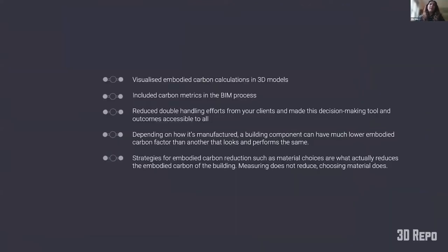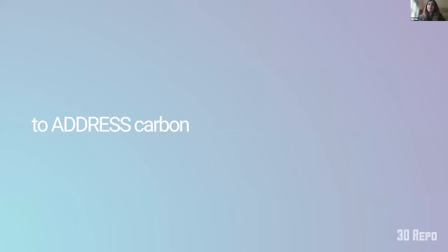We've seen how to visualize embodied carbon calculations in 3D models, include carbon metrics in the BIM process, reduce double handling, and understand that depending on how a component is manufactured it can have a much lower embodied carbon factor than something that looks and performs the same. Material choices are what actually reduce the embodied carbon of a building. Tools like 3D Repo highlight and visualize this, but they will never give you the answer — measuring does not reduce; choosing the material does. Now we're going to look at how we can address carbon.